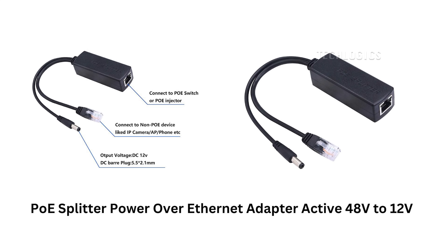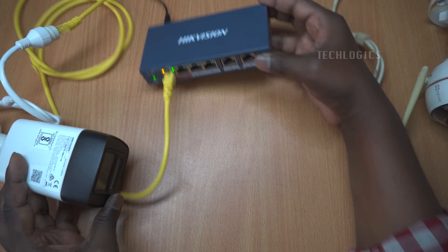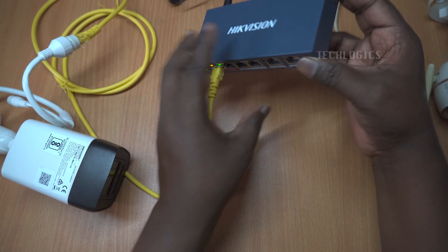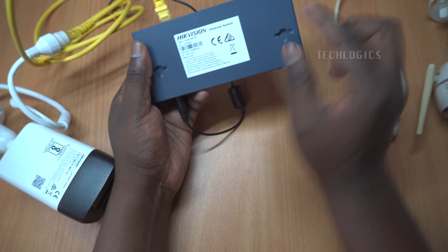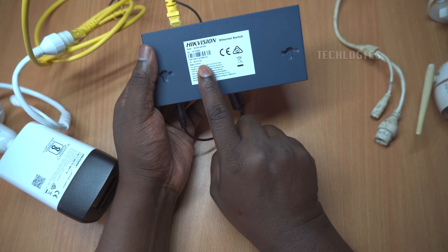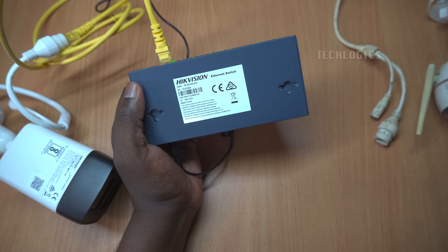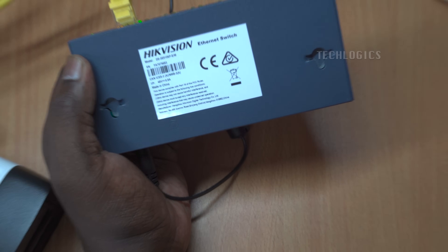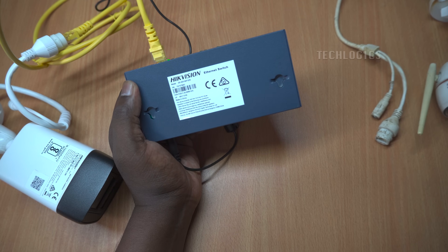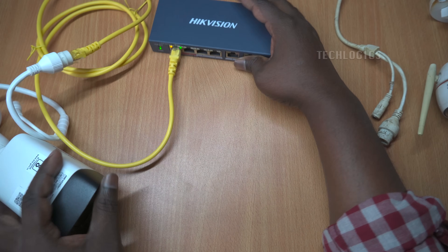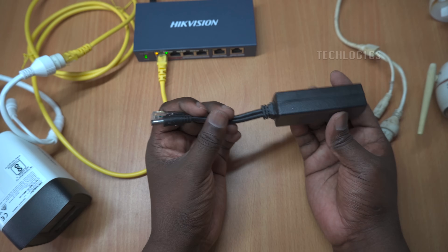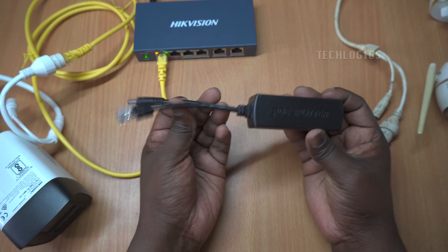A PoE — Power Over Ethernet — Splitter is a device that separates data and power from a single Ethernet cable coming from a PoE-enabled switch or injector. It converts the incoming 48-volt power to a lower voltage, commonly 12-volt, and provides two outputs: one Ethernet port for data connectivity and one DC output jack for powering devices. This allows non-PoE devices like IP cameras, routers, and modems to receive both power and network access through the same cable, simplifying installation and enhancing flexibility in network setups.